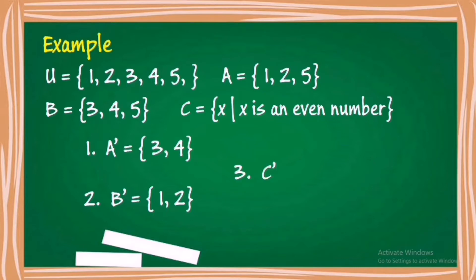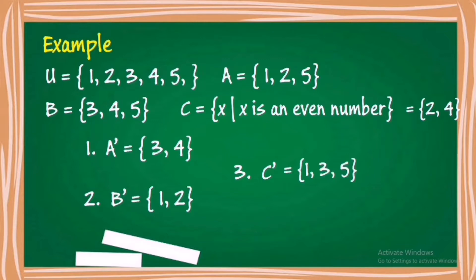How about the elements of the complement of C? Set C is described as the set containing X such that X is an even number. The even numbers in the universal set are 2 and 4. Therefore, C contains the elements 2 and 4. What are the elements of the complement of C? The elements are 1, 3, and 5.